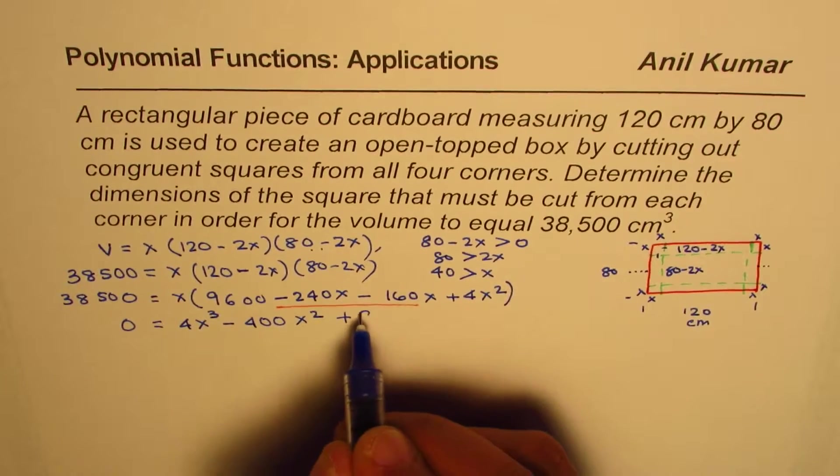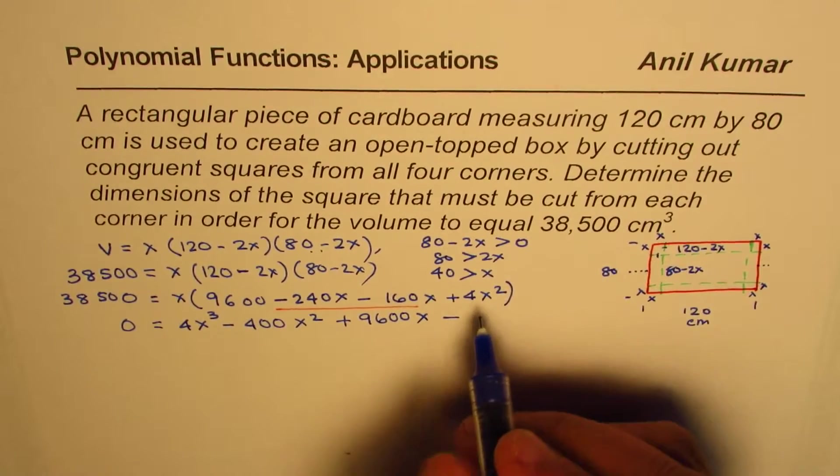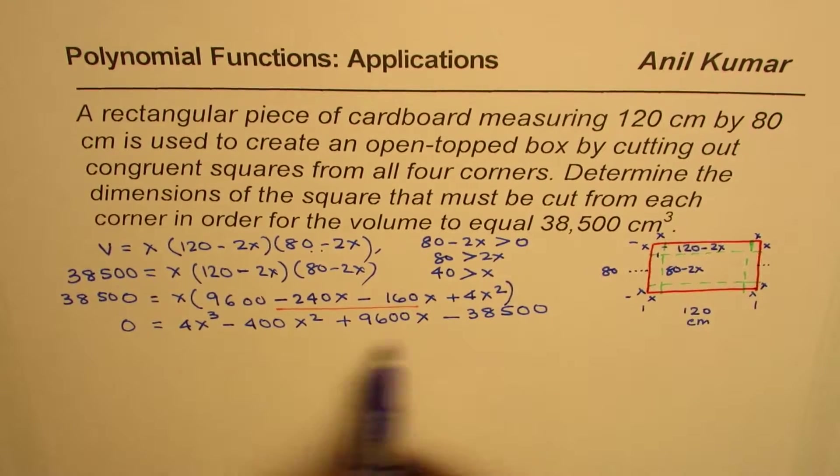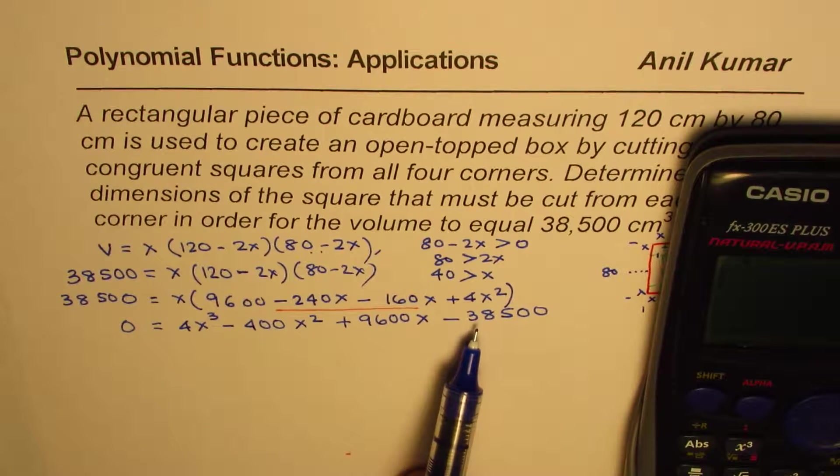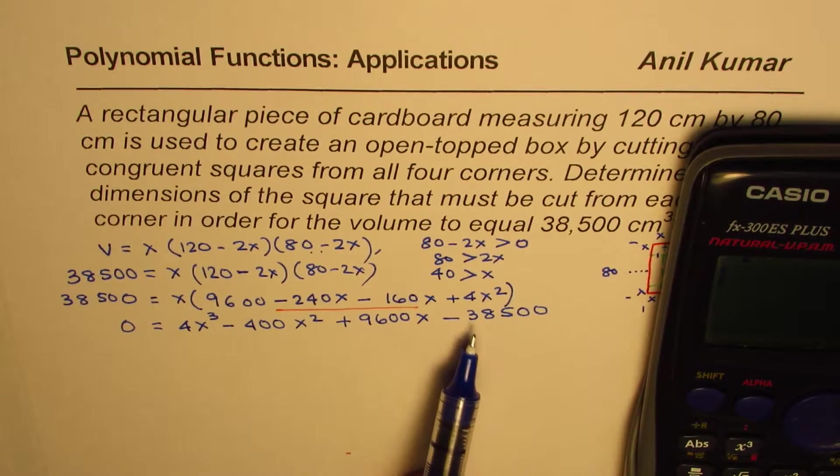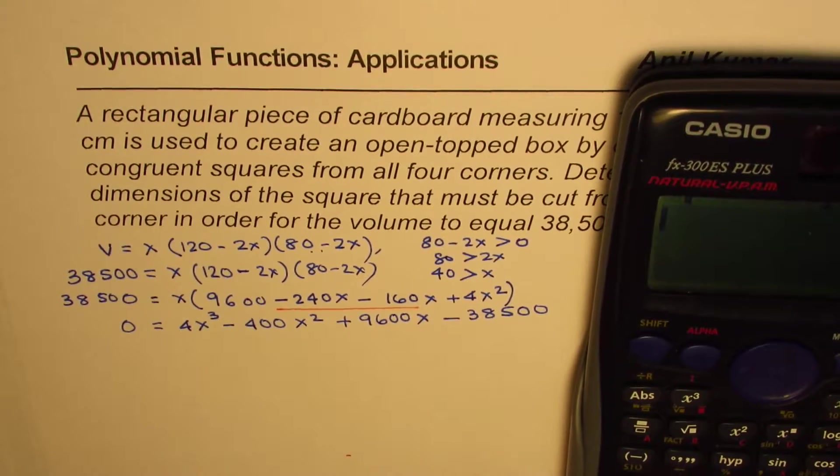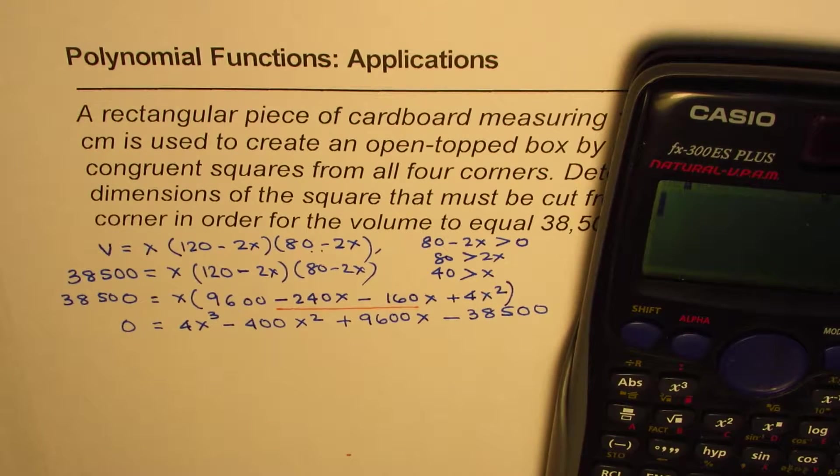When you combine these two, 240 plus 160, you will get 400. So we'll write minus 400X squared, and we have plus 9600X, and we bring minus 38,500. So now we have a polynomial in degree 3. To factor this, we can try different values of X. All those values should be factors of the constant term here, 38,500. So you can substitute some values. You know, 2 could be a good value to try, for example.